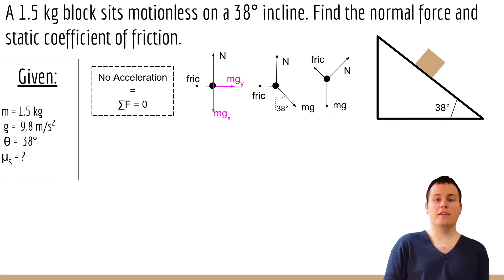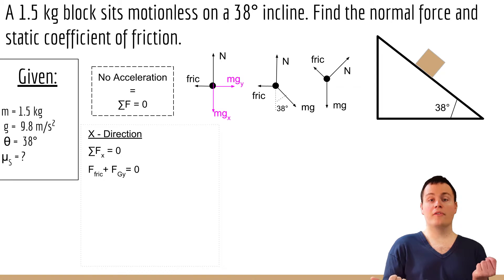So I first went to solve the coefficient of friction. To do that I looked at the x-direction, or the new x-direction, and we know that the sum of the forces has to equal zero. The only two forces acting in this direction are the force of friction in one way and the component of gravity that's pulling in the other.